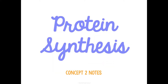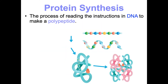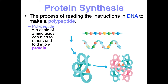Concept two: we are going to be talking about protein synthesis, so how our cells make proteins. Because proteins are one of those four macromolecules that you cannot live without, and they run your cells. This is the process of reading the instructions stored in your DNA, and from those instructions we're going to make a polypeptide. The polymer of proteins is a polypeptide — a chain of amino acids. Amino acids are the monomer, and they combine and fold into a protein.